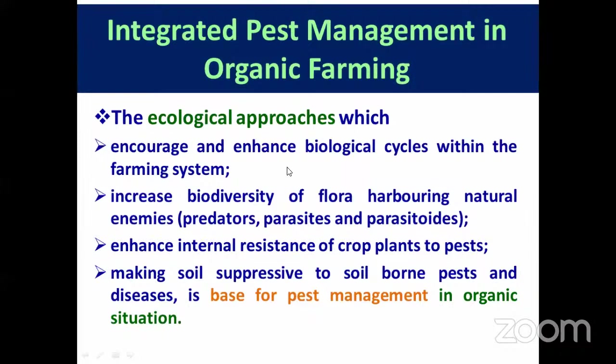Non-chemical ecological approaches are given more emphasis, which generally increase and enhance biological cycles within the farming system. These biological cycles involve regulation of pest control and enhancement of natural dynamics. There are so many predators and parasites of important insect pests, as well as fungal, bacterial, and viral biocontrol agents present in our agroecology. We have to manipulate our whole agroecosystem to increase the population of natural enemies to control different kinds of pests and diseases.